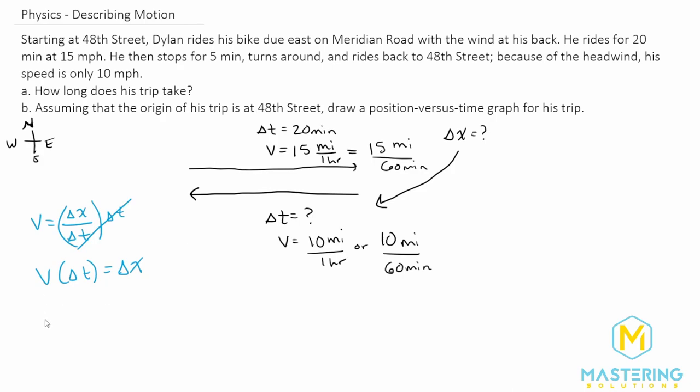So for delta x, we have the velocity, which we said was 15 miles per 60 minutes. And then we're going to multiply that by the time, which we said was 20 minutes. So now you can see where we were talking about the minutes will cancel, and we'll be left with just miles.